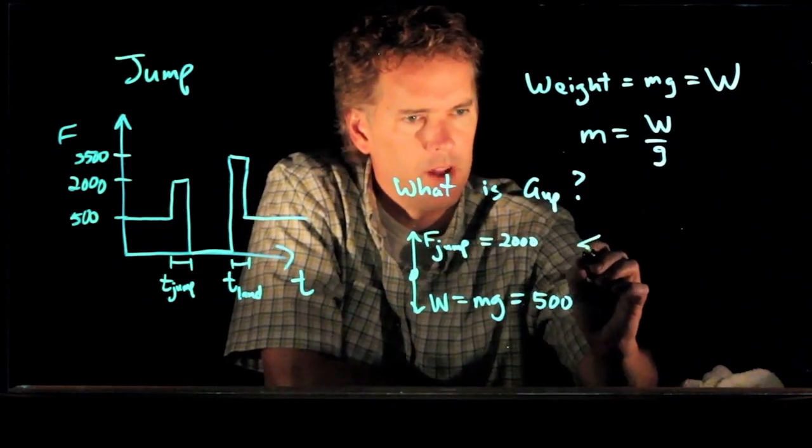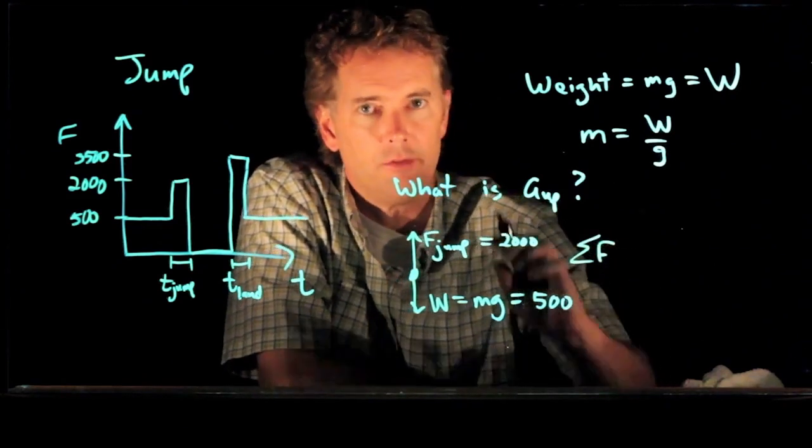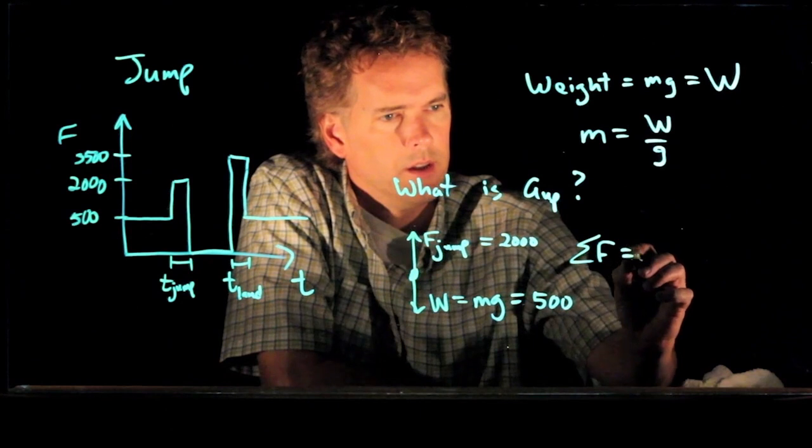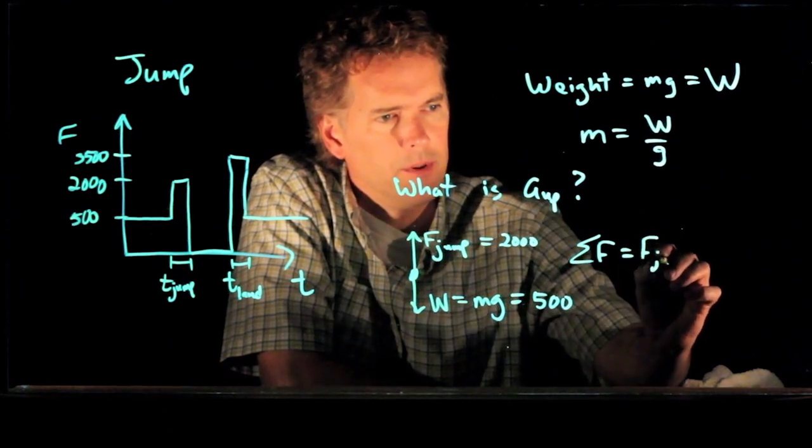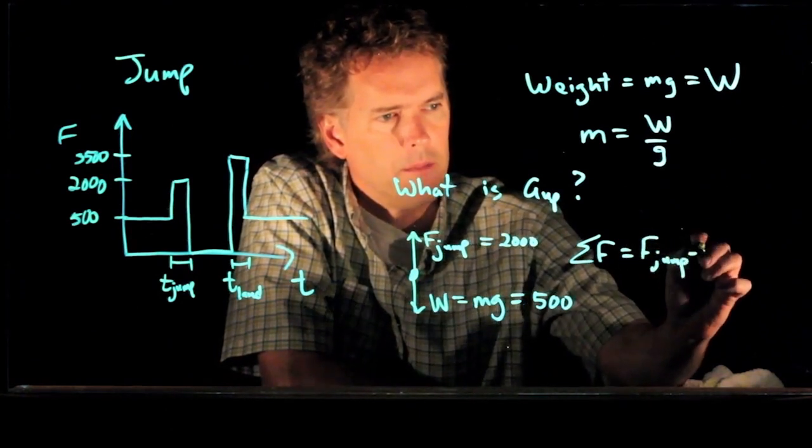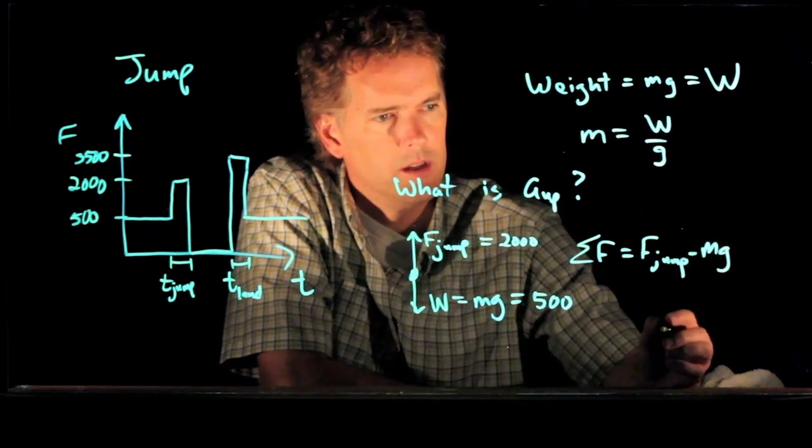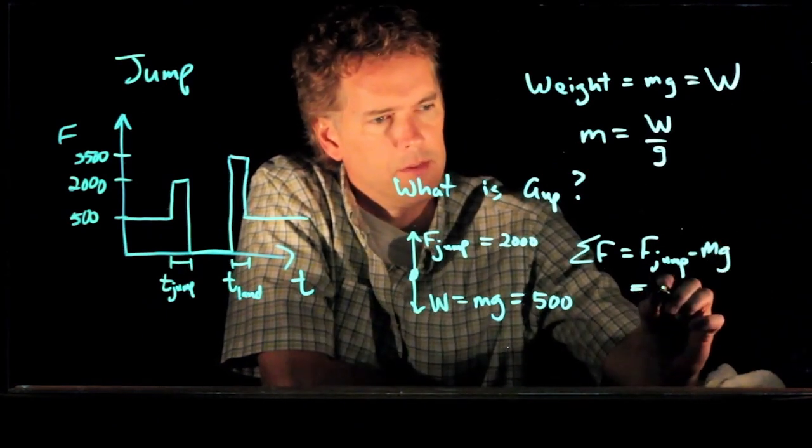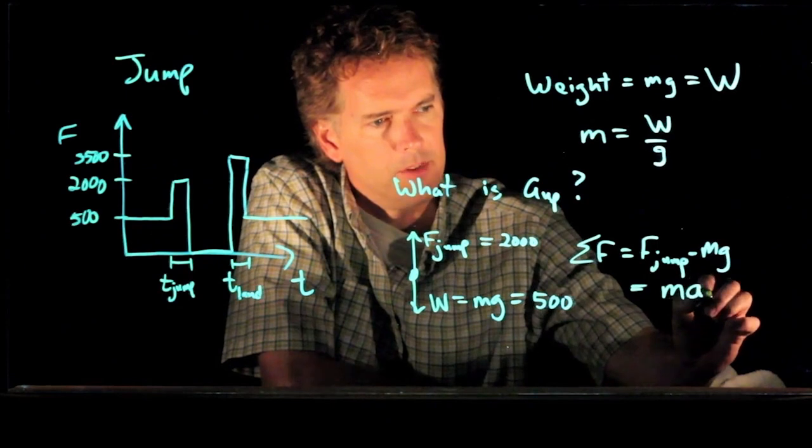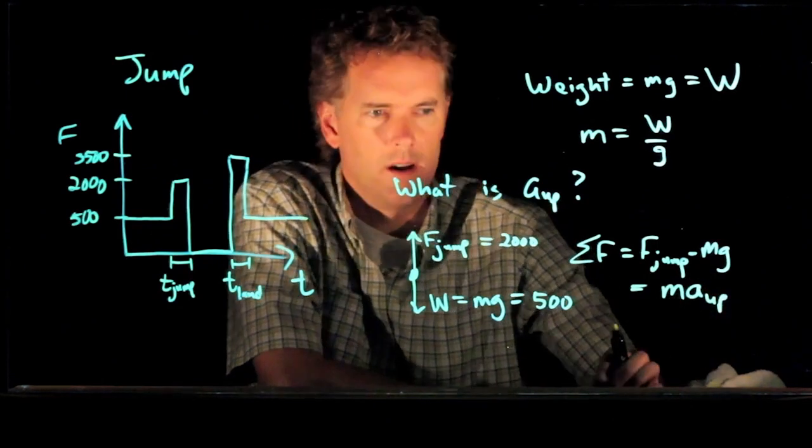So now we can write the sum of the forces in the vertical direction is what? F_jump minus mg. And all of that has to be equal to the mass times the acceleration going up.